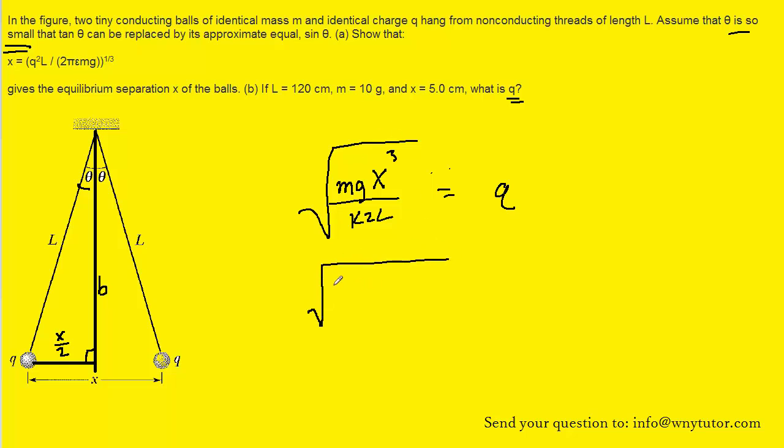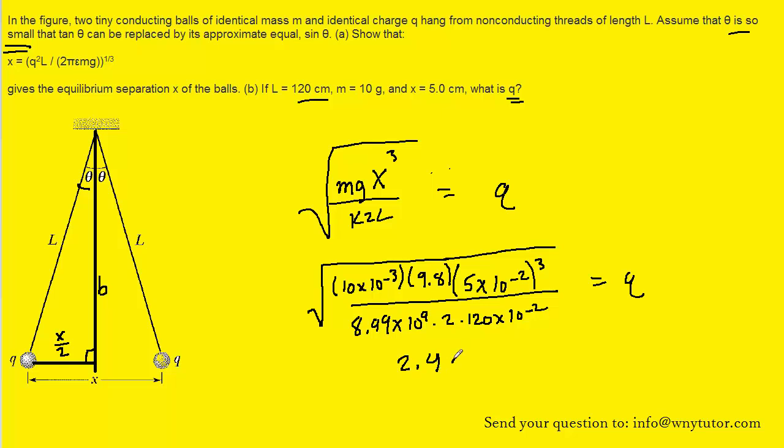We can now go ahead and plug in the known values that were given to us. The mass was in grams. So you'll have to multiply that by 10 to the minus 3 to get it into kilograms. G of course is 9.8. x was given to us in centimeters. So we'll have to multiply it by 10 to the minus 2. And then don't forget to cube the x. Divided by k which is a constant. 8.99 times 10 to the ninth times 2 times L. Which is given in centimeters as well. So we'll have to multiply that by 10 to the minus 2. And when you carefully plug that into your calculator, you should get roughly 2.4 times 10 to the minus 8. And technically that would be both positive and negative. But since the question is only asking for the magnitude of the charge, we would leave our answer as just the positive 2.4 times 10 to the minus 8. And the unit there will be coulombs. And so this is the correct answer for the magnitude of the charge, q.